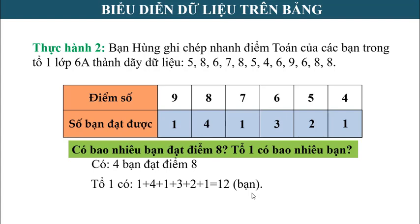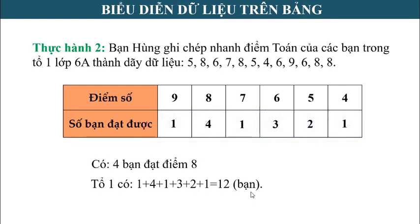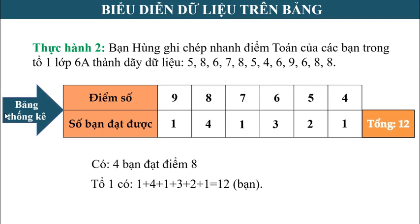Thông qua bài thực hành số 2, nhìn vào bảng này, ngoài biết được số điểm và số lượng từng loại điểm, chúng ta còn xác định được tổng số bạn là 12. Bảng có đặc điểm như thế này được gọi là bảng thống kê. Chúng ta cùng sang phần 2 nhỏ: Bảng thống kê.